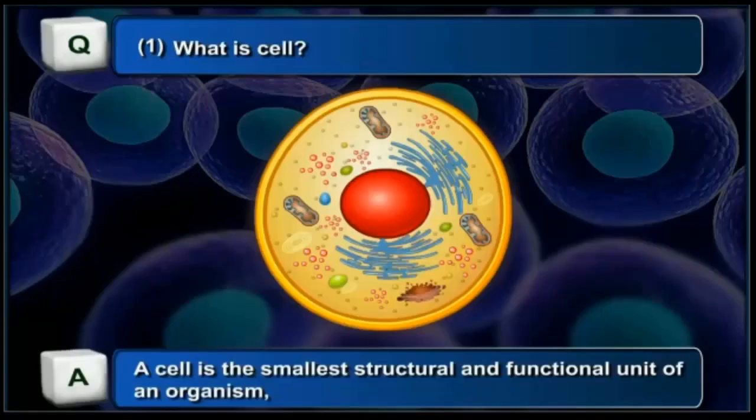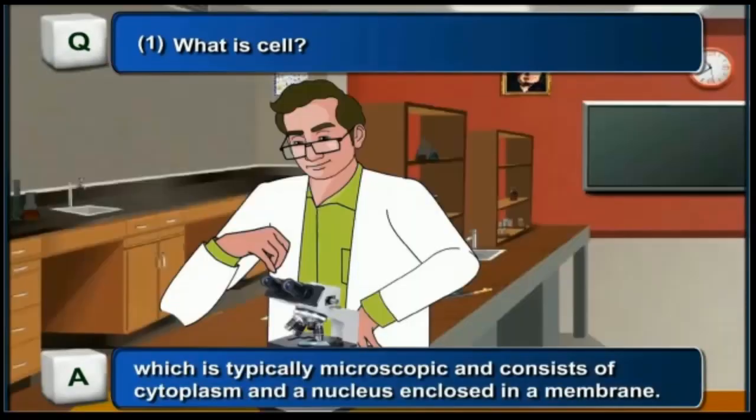Now, what is a cell? A cell is the smallest structural and functional unit of an organism, which is typically microscopic and consists of a cytoplasm and a nucleus enclosed in a membrane.